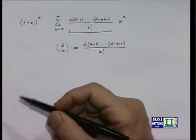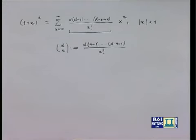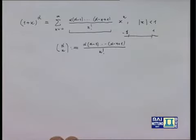Si può dimostrare che quest'uguaglianza sussiste certamente per tutti gli x in valore assoluto minore di 1. Anzi, per certi valori di alfa, l'intervallo si estende all'intervallo aperto (-1, 1) con eventualmente l'aggiunta del punto 1, o anche di entrambi gli estremi per certi altri valori di alfa. Per stare nel sicuro, certamente tutti gli x con |x| < 1 sono punti di sviluppabilità.